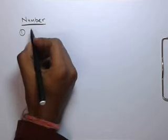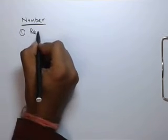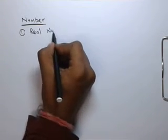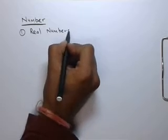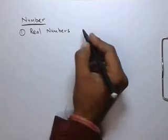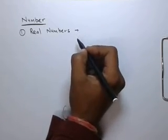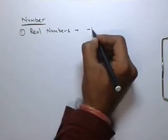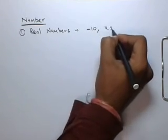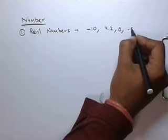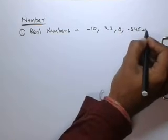First, we will learn the real numbers. Real numbers are those numbers which can commonly identify and quantify like minus 10, 4.2, 0, minus 3.45, etc.